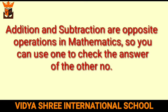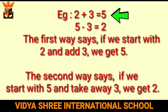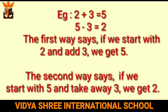Addition and subtraction are opposite operations in mathematics, so you can use one to check the answer of the other. For example, 2 plus 3 equals 5 and 5 minus 3 equals 2. The first equation says if we start with 2 and add 3 we get 5; the second says if we start with 5 and take away 3 we get 2. We are just playing with the same numbers forward and backward.